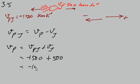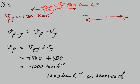So resultant is minus 1000 km per hour. That is 1000 km per hour in reverse direction. Reverse direction means direction opposite to the motion of jet plane.